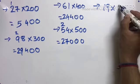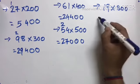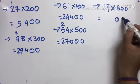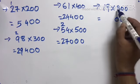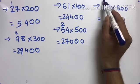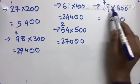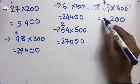98 times 800. Two zeros. 8 times 9 is 72, carry 7. 8 times 1 is 8 plus 7 is 15. I'm sorry, 98 times 8 is... 8 times 8 is 64, carry 6. 8 times 9 is 72 plus 6 is 78. 78,400.